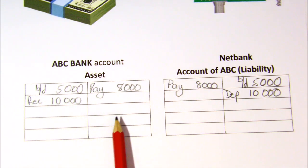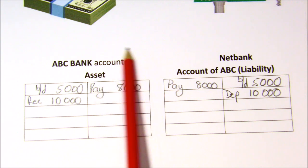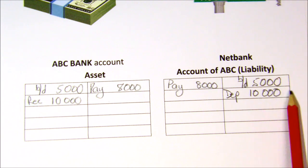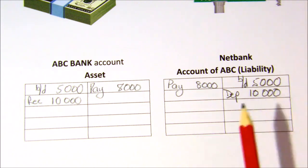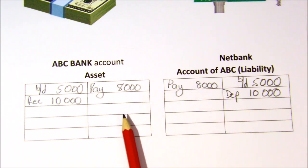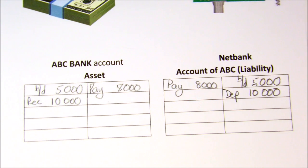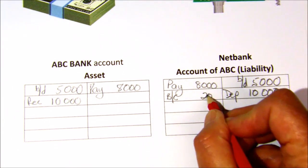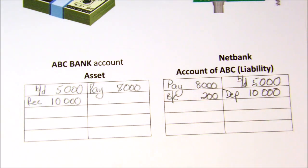The reason for doing reconciliations is that we need to control and check that our bank account agrees with what the bank says we have. We do a comparison between the two and find out if there are any differences. Those differences could be errors or things that have been left out — it's part of your internal control. For example, the bank charges us, so we will have bank charges of two hundred rand which reduce our account.